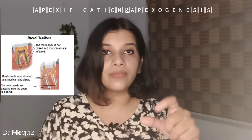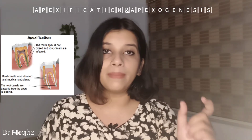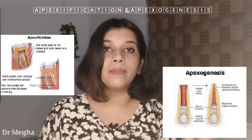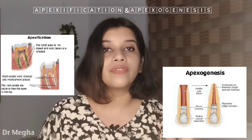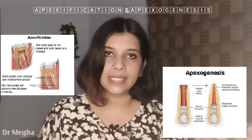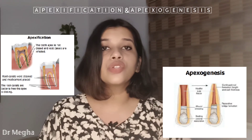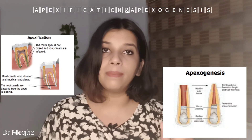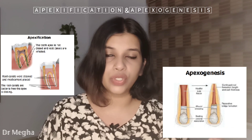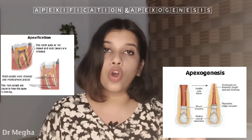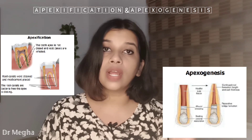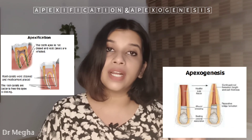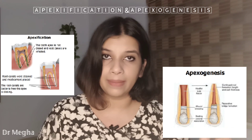Apexogenesis — 'genesis' as the name suggests is something which can be born again. So it is indicated for a young permanent immature tooth in which the pulp is not irreversibly damaged or necrotized. Apexogenesis is a vital pulp therapy procedure for encouraging the formation or continued physiological root development.